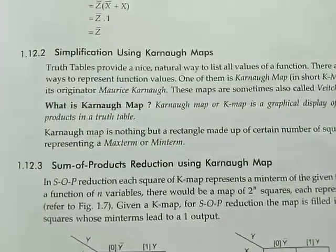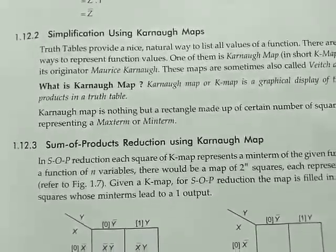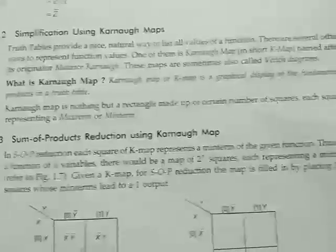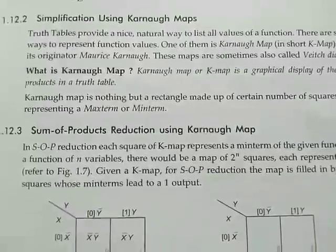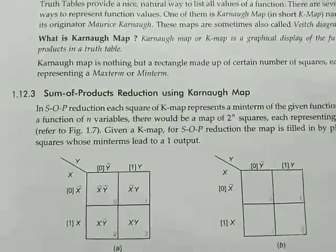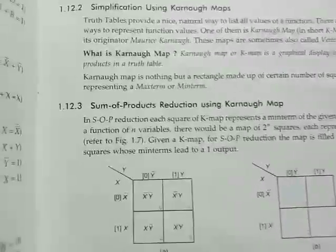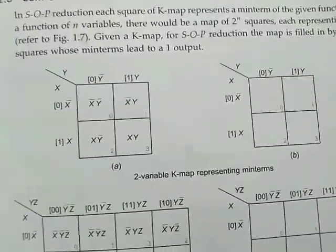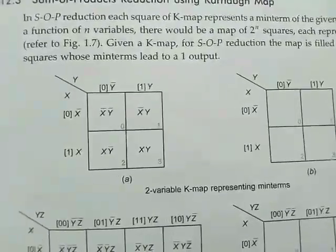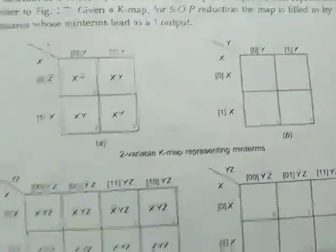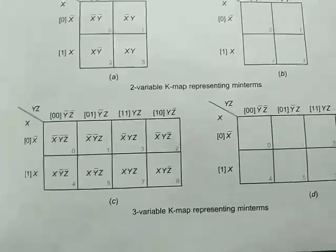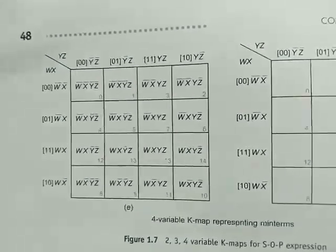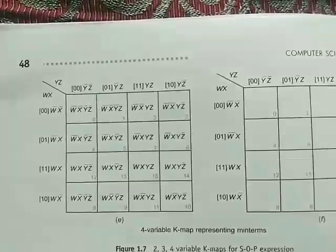The most important topic is simplification using Karnaugh map, or K-map. This K-map is a graphical display of the fundamental products in the truth table — sum of products reduction using K-map. This is the representation of a K-map using two inputs, followed by the K-map for three inputs, and then the truth table format for four inputs.